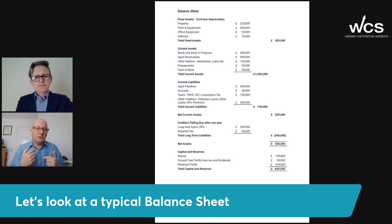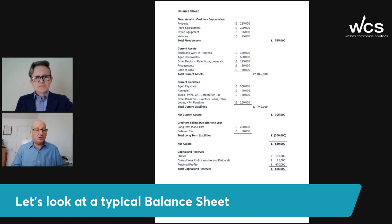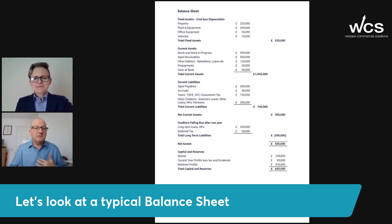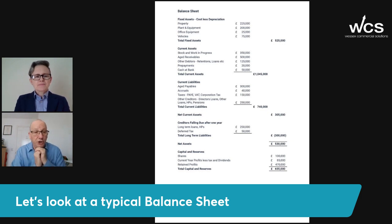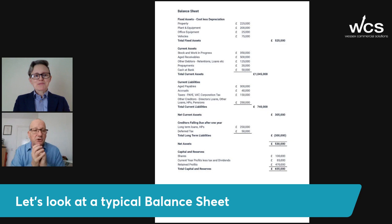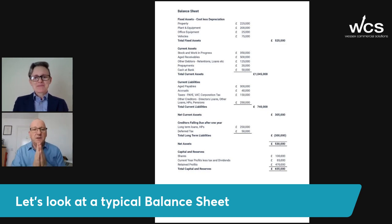Current liabilities are things payable in the next year. Generally things like people you owe — aged payables, trade creditors, accruals. Maybe you've got an accountancy bill you haven't paid, or electricity or whatever. Then you've got taxes: your PAYE, VAT, corporation tax, et cetera, and other creditors, which could be things like director's loan, hire purchase, pensions that you owe through NEST or whatever. I would add that if your director's loan is in current liabilities, fine — the business owes you as a director. If it goes into current assets, be careful and talk to your accountant, because you could have a tax problem with S455 tax, depending on the value and whether you can repay it.